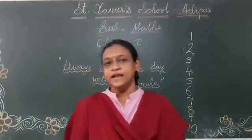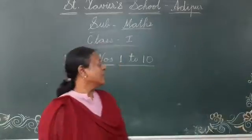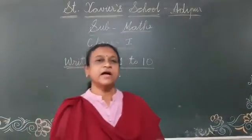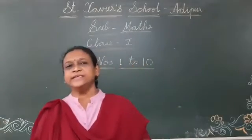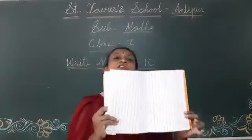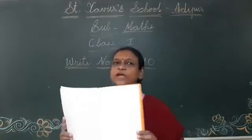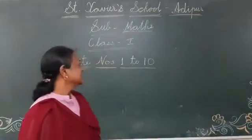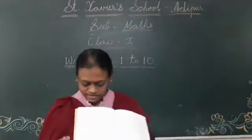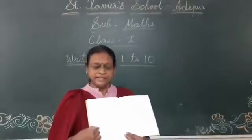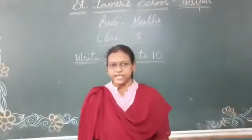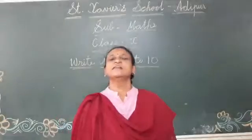So, we will write and learn numbers orally also. 1, 2, 3, 4, 5, 6, 7, 8, 9 and 10. So, you have to write in your square notebook. This is your square notebook. Okay? This is your homework. Okay? Thank you, children. Thank you. Bye.